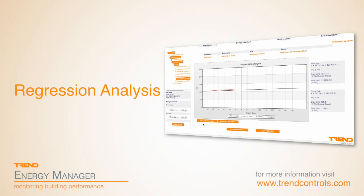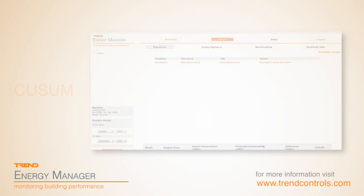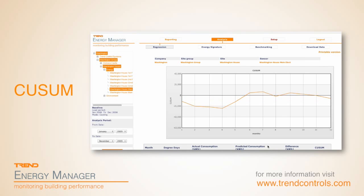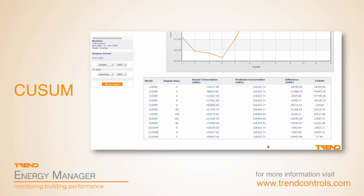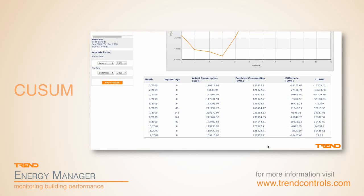Regression analysis helps to visualise a building's dependency on external conditions and allows you to interpret your building's response to those conditions against a baseline, showing improvements against previous years. The Q-Sum is a measurement of how well you're doing. It enables you to see savings that you've made month by month over the baseline.